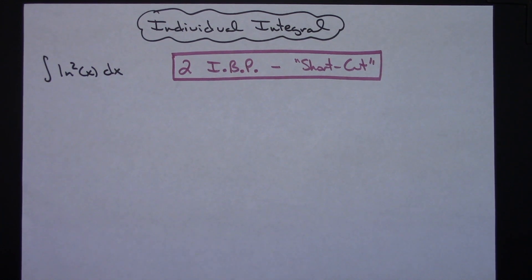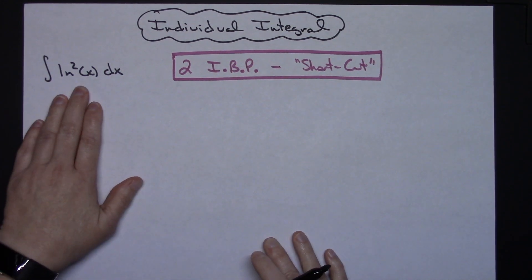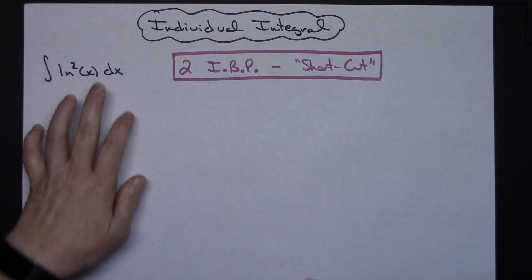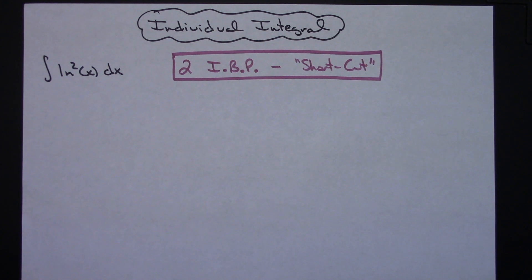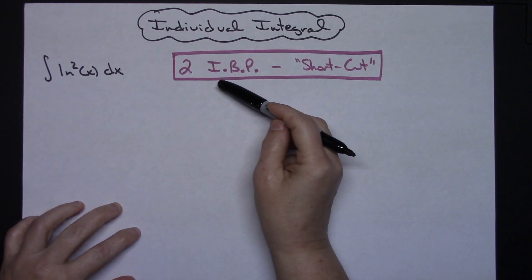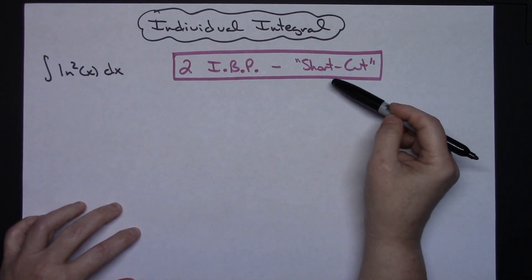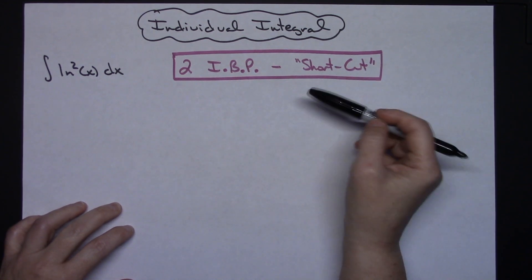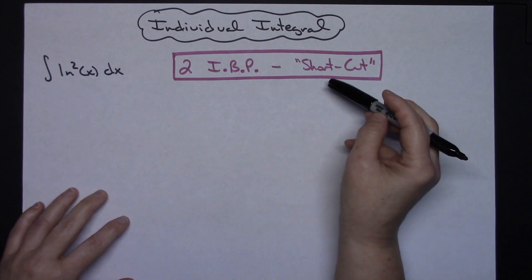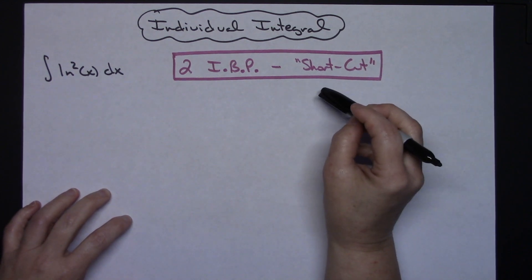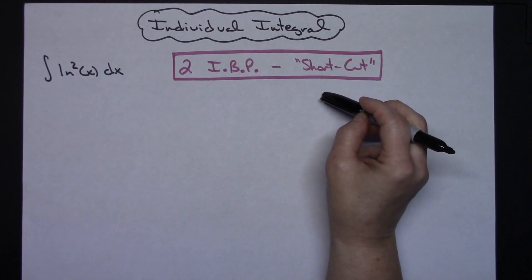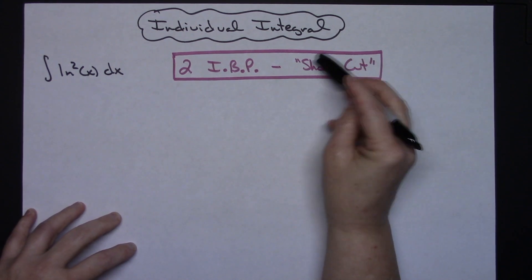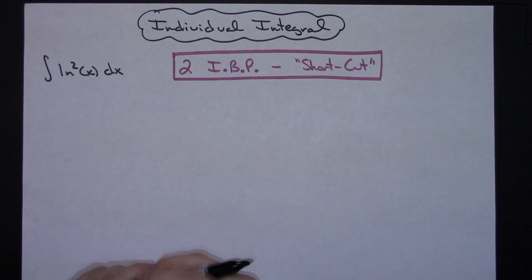In this video I'm going to be working out an individual integral — the integral of natural log of x quantity squared dx. To do this problem it is going to involve two integration by parts, however I am going to use a shortcut method. If this is the first time you've seen this shortcut, check the description below and the channel because I've got a video that goes into great detail about how to implement this shortcut for integration by parts.